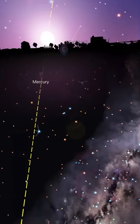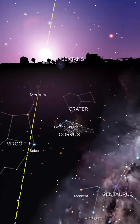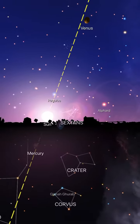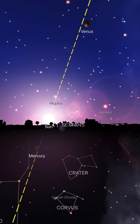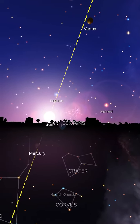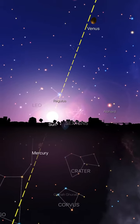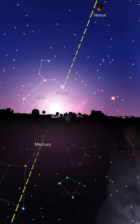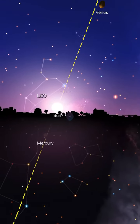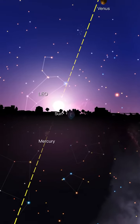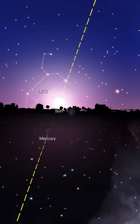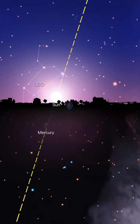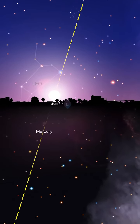Now here, this is live from Night Sky. It's an app, and the yellow dotted line is the ecliptic plane where the Sun, the planets, moons, and the Earth all reside along this imaginary line called the ecliptic plane.